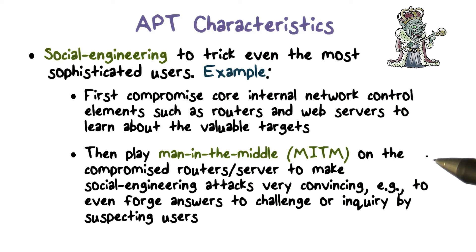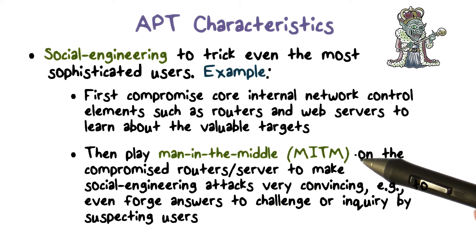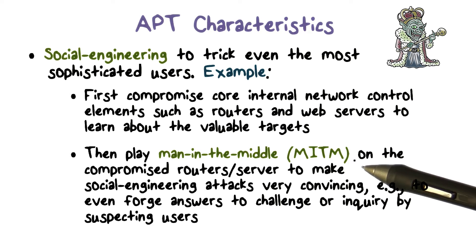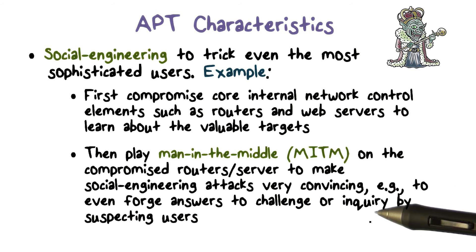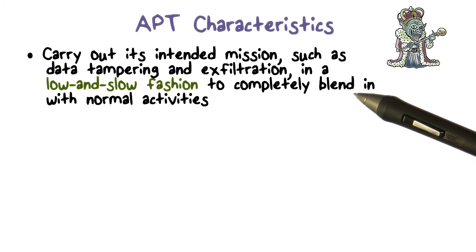For example, if the email recipient is not certain about the email attachment and sends an email to the sender asking whether they sent it, the APT can play man-in-the-middle to intercept such an inquiry and send an answer back saying yes. APTs are also designed to blend in with normal activities to avoid detection.